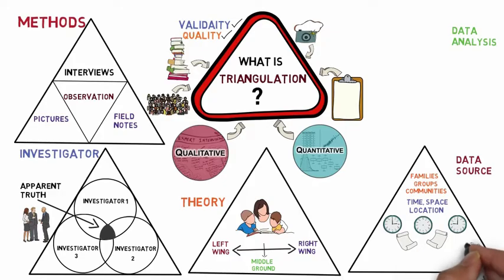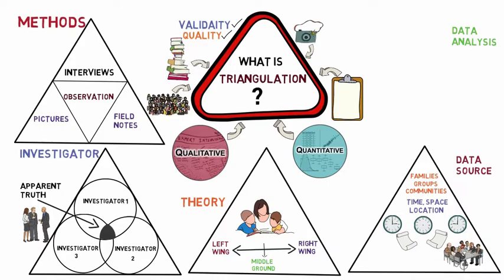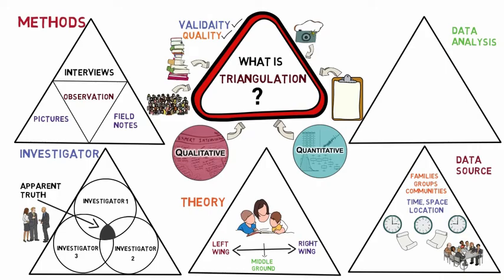For example, Gray and Jones interviewed political leaders, members of Congress, lobbyists, academics, and members of organizations involved in a finance campaign. Another way of triangulation is through data analysis triangulation.